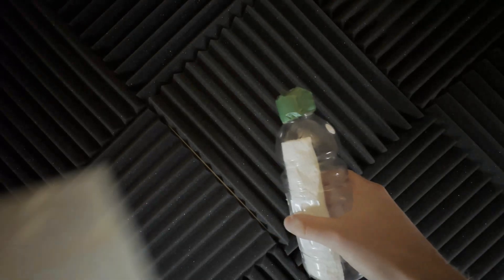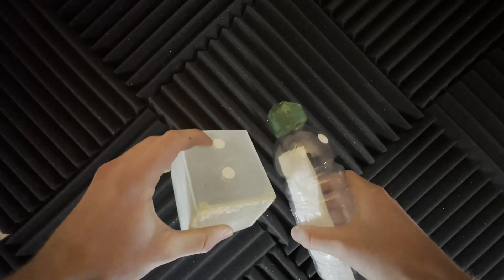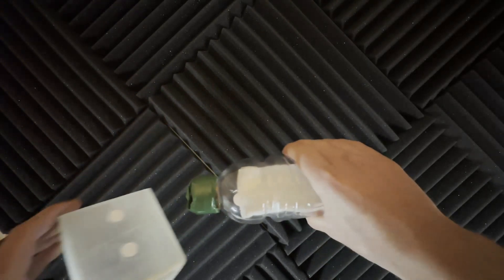All in all, the final prototype consists of components utilized in both the alpha and beta prototype, with improvements in the hole diameter, bonding the material, and functionality.